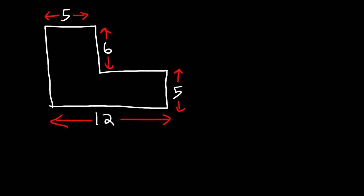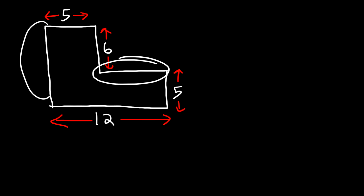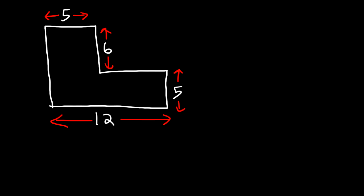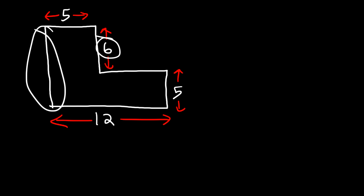So let's start with the perimeter. All we need to do is find the length of the two missing sides. Starting with the left side, notice that it's simply 6 plus 5, or 11. So that's 11 units long.